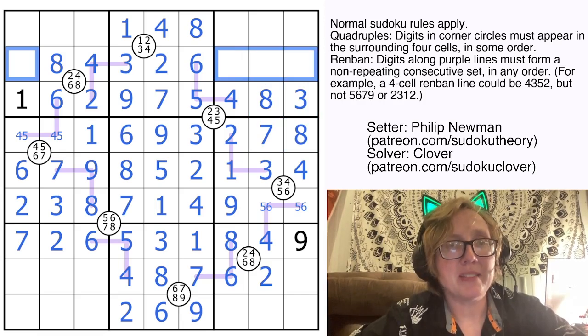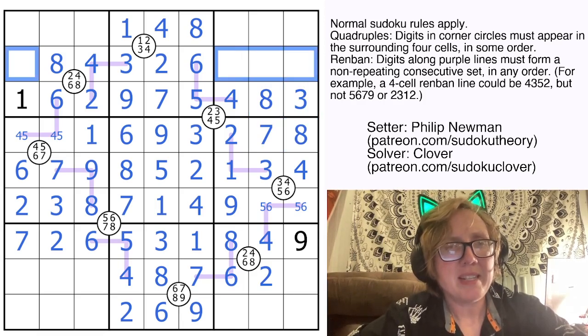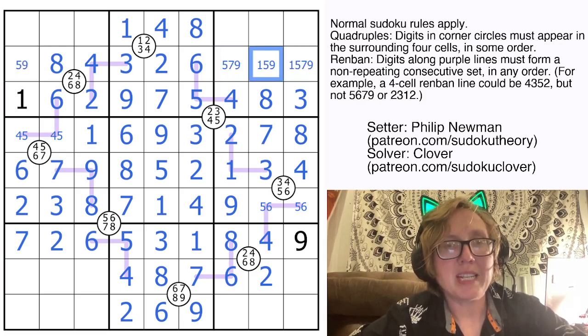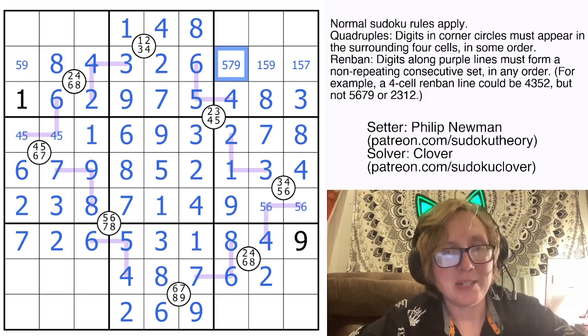In this row, what do we still need? So we don't have anything easy there. We still need 1, 5, 7, and 9. That can't be 1 or 7. That can't be 1. That can't be 7. And that can't be 9. Okay.